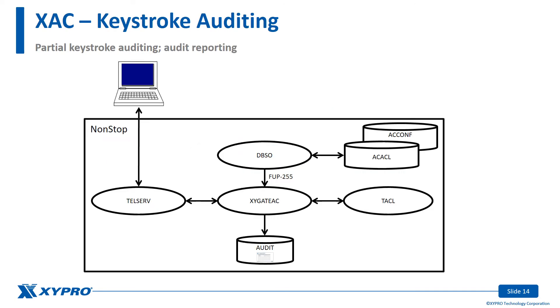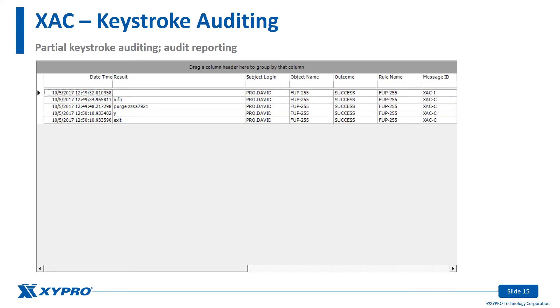Once again, the Zygate Report Manager was used to view the XAC audit file contents. With partial keystroke auditing, audit entries are made only when XAC commands are invoked.